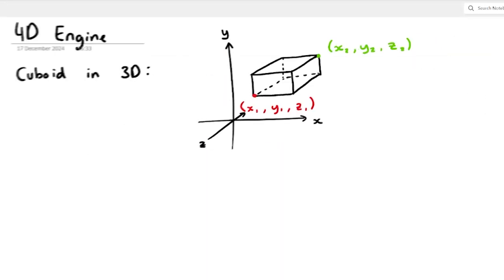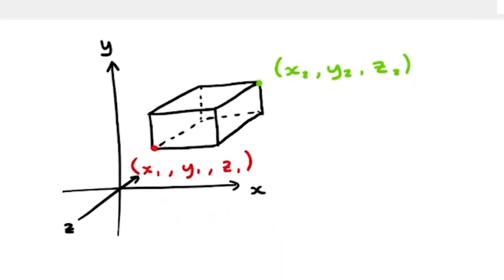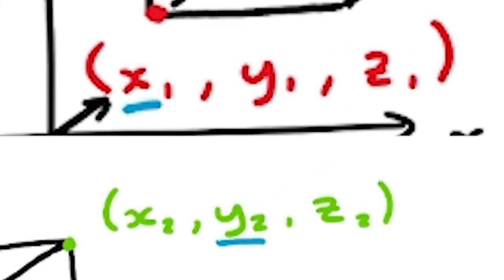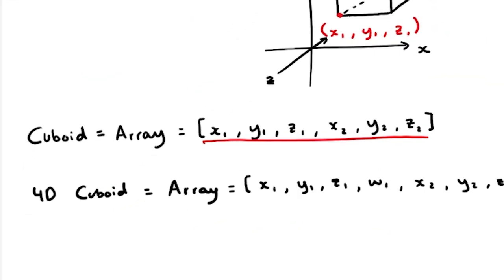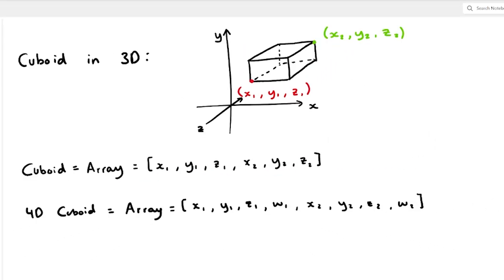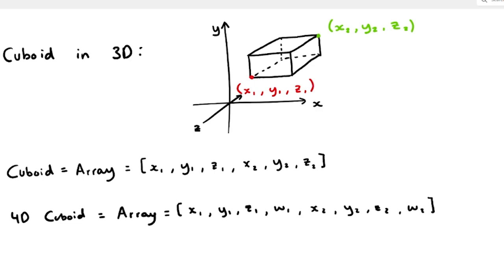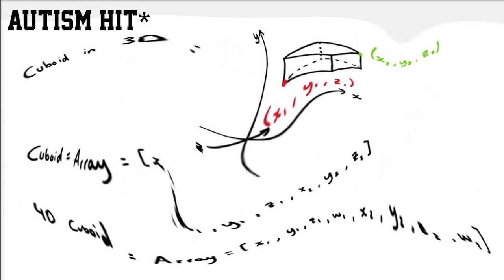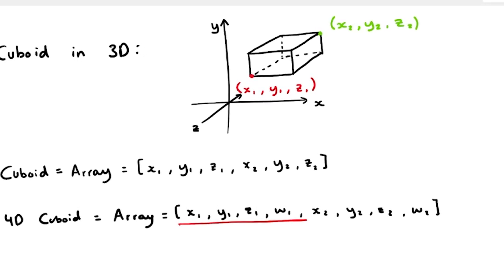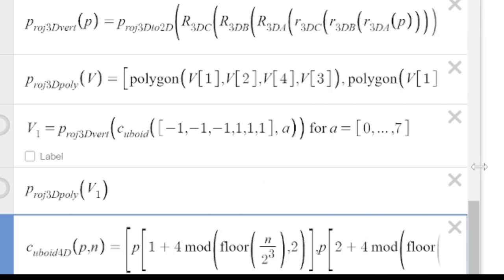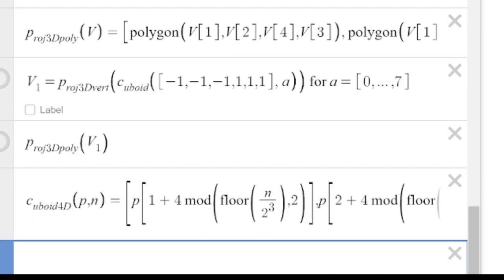A cuboid can simply be defined as a pair of two opposite points in 3D, since any other point on the cuboid can be found by taking x, y, and z components from the opposite points. So we can use an array of six elements where each element represents an x, y, or z component of the opposite points to represent our cuboid in 3D. And just like how we can use an array in 3D, we can also use an array in 4D to represent our points using x, y, z, and w components. So we can simply copy this array into an equation on Desmos to get a 4D cuboid.